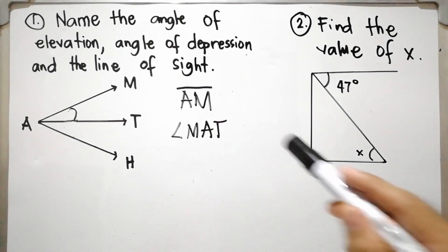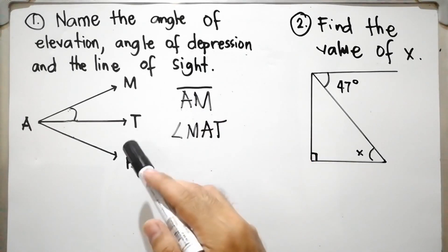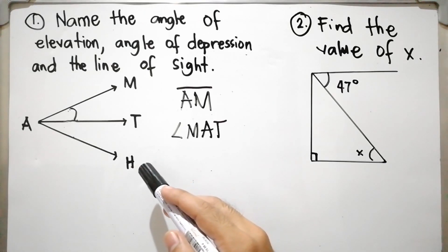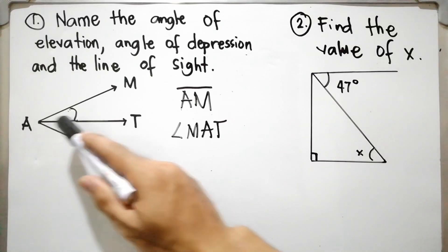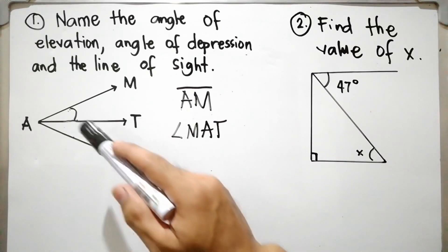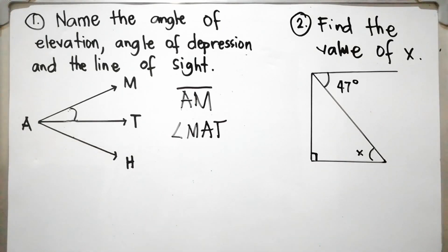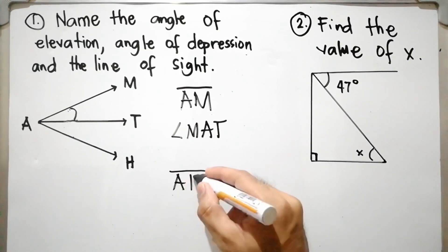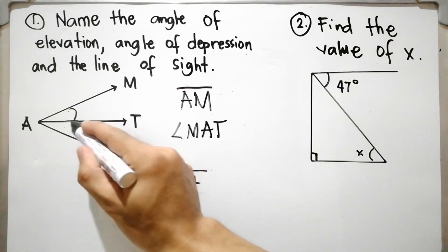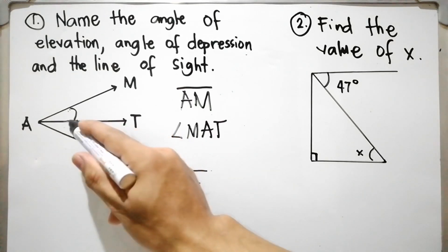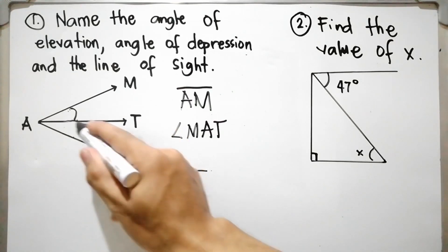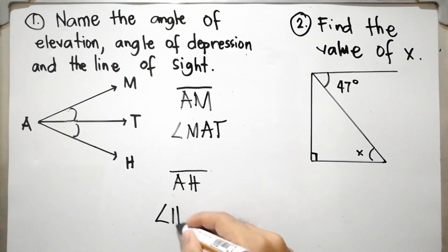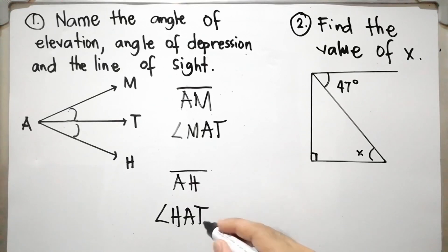What is the angle of depression in this figure? The angle of depression is the angle formed between the horizontal line and the line of sight below. The line of sight below is line segment AH. The angle formed between horizontal line AT and AH is angle HAT or TAH.